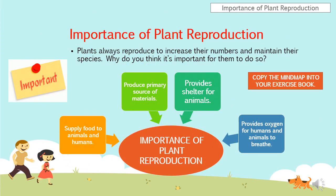Shall we start our lesson today? So, have you ever wondered why plant reproduction is important? Plants always reproduce to increase their numbers and maintain their species. Plant reproduction is very important because they can supply food to animals and also humans — that is the first one. The second one, they can produce primary source of materials. The third one, they can provide shelter for animals. And the last one, they also provide oxygen for humans and animals to breathe.